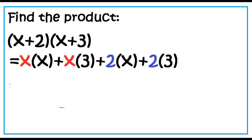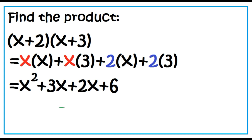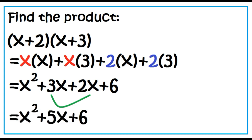First: X times X. Outer: X times 3. Inner: 2 times X. Last: 2 times 3. Note: 3x and 2x are similar terms. 3x plus 2x is 5x. The final answer is X squared plus 5x plus 6.